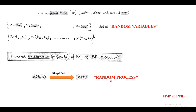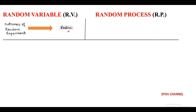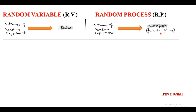Now, we can easily differentiate between random variable and random process. When the outcome of any random experiment is mapped to a random variable, while when the outcome of a random experiment is mapped to a time-varying function or a waveform, then it is called as random process.